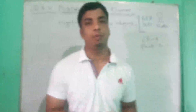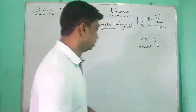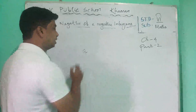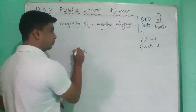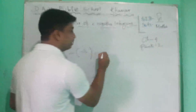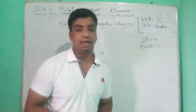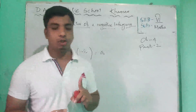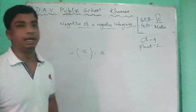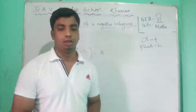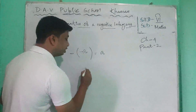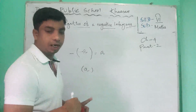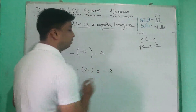So let's start. Negative of a negative integer — if a is a negative number it means minus. So the negative of a negative number is a positive number. Negative of a negative integer is a positive integer. Another fact: the negative of a positive integer is a negative integer.